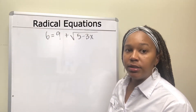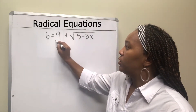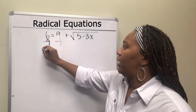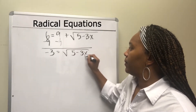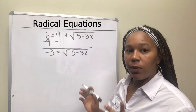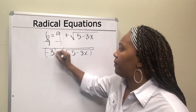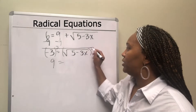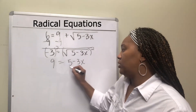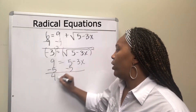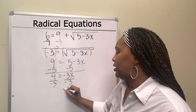This is a radical equation, so the first thing is to isolate the root. Get rid of the 9 by subtracting 9 from both sides. Then raise both sides to the second power since it's a square root. Negative 3 squared is 9, and the square root and square cancel, leaving 5 minus 3x. Subtract 5 from both sides to get 4 equals negative 3x, then divide by negative 3 to get x equals negative 4 thirds.